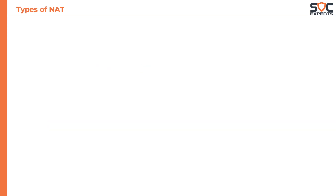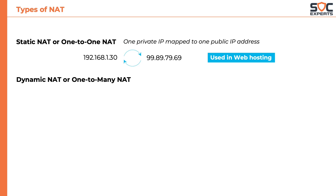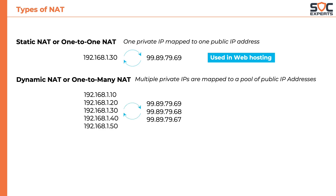Let's now take a look at different types of NATing. First, we have static NAT, also called 1-to-1 NAT. In this, one private IP address is mapped to one public IP address. It is mostly used to host public-facing servers like web servers or email servers. Then we have dynamic NAT, also called 1-to-many NAT. In this, multiple private IP addresses are mapped to a pool of public IP addresses. The mapping takes place using some logic like round robin or least used, etc.